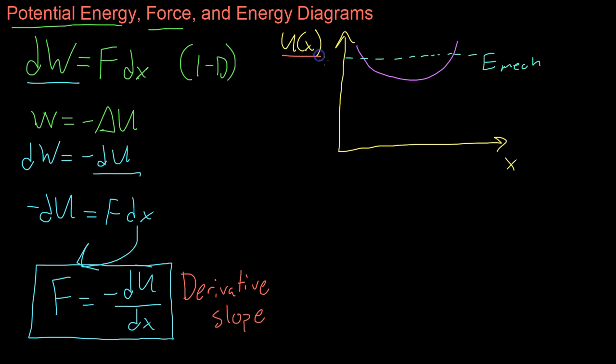If we look at a graph of potential energy versus position, and this is what is known as an energy diagram, basically where you graph U(x) over x, we can break this down into at any given point.